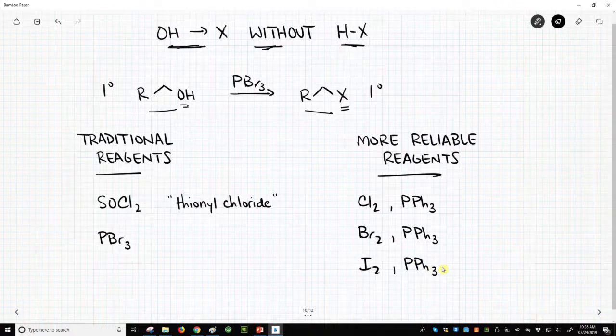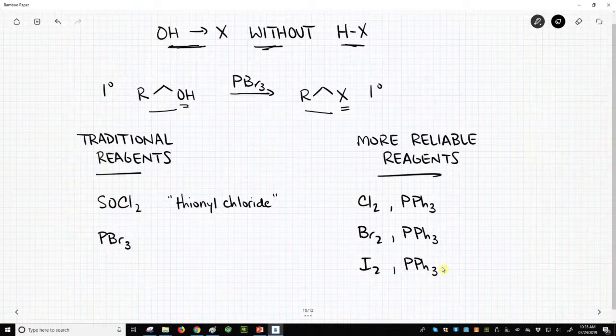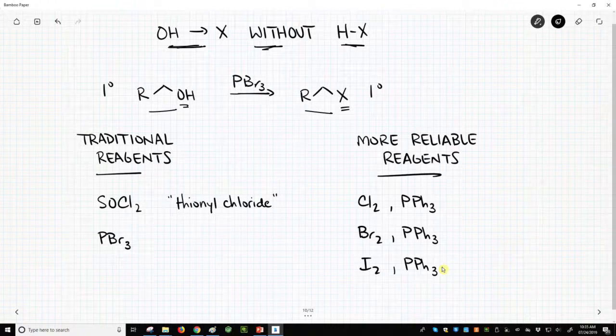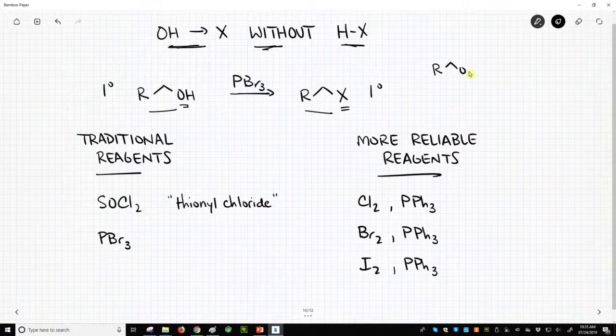So that phosphorus is making three bonds. Those three bonds are to three different benzene rings, three phenyl groups. These reagents, and there are about a hundred variations of them, are really common ways to convert an alcohol.